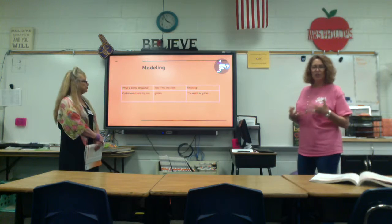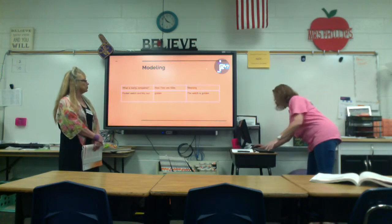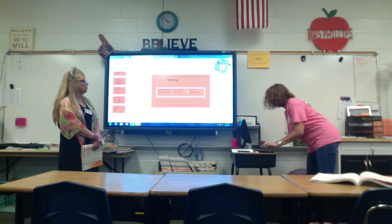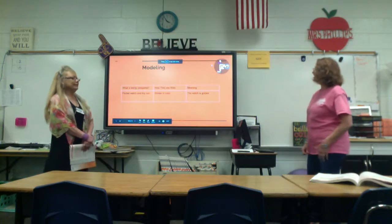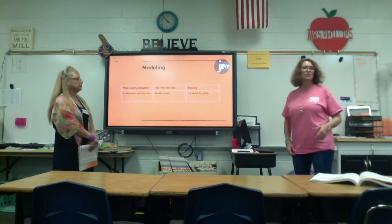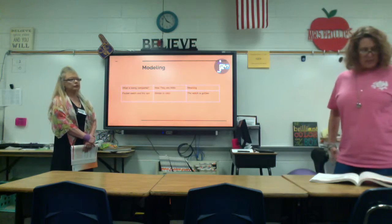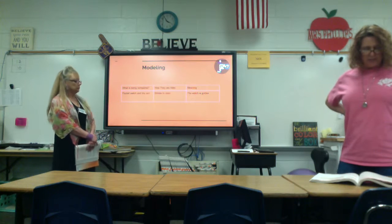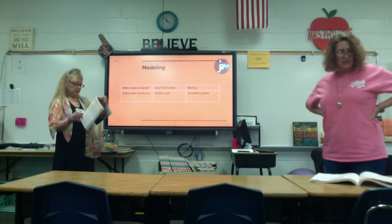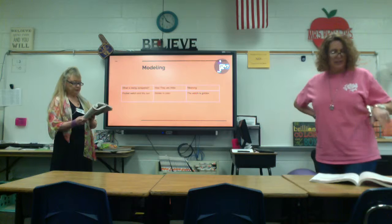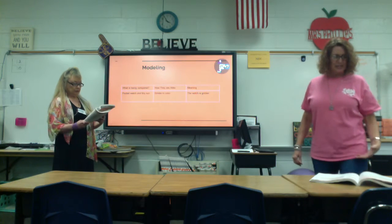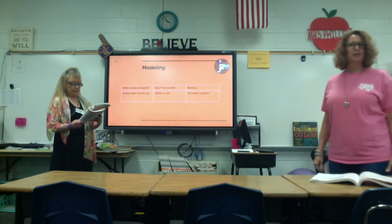Make sure your charts match — the first comparison we helped you through, and this one you picked out on your own. Fill out your chart to say that the watch and the tiny sun are being compared, that they are alike because they are similar in color — you could even say they're both shiny. The meaning is the watch is golden. Now, how does this comparison suggest Gabriel's feelings about the watch? Take a few minutes, write your answers on the lines on that page, and Ms. Maddox and I are going to come around and help you.